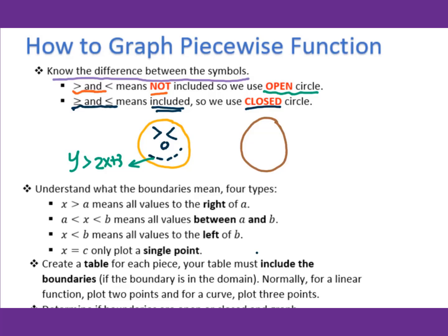For a piecewise function, the open circle refers to the boundary. When you use the dotted line to show the inequality, use the open circle for greater than or less than. When you have greater than or equal to, you use the closed circle.